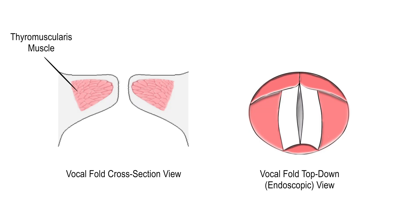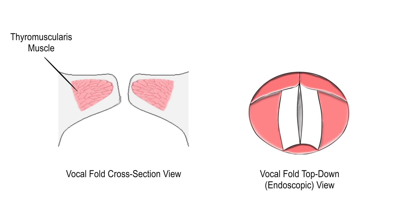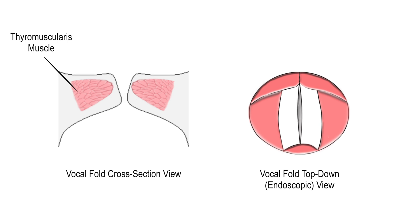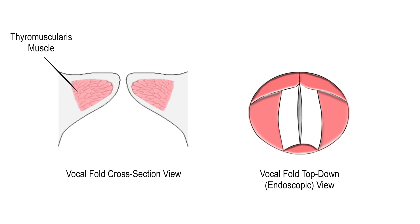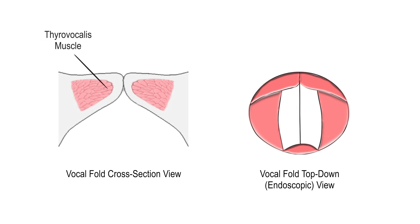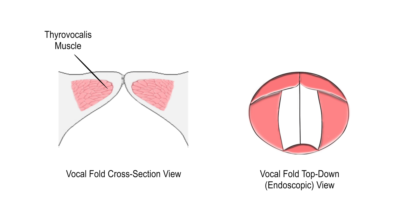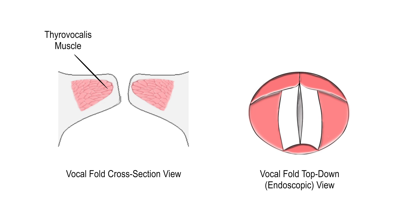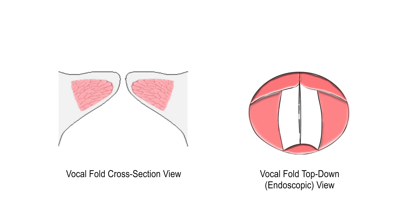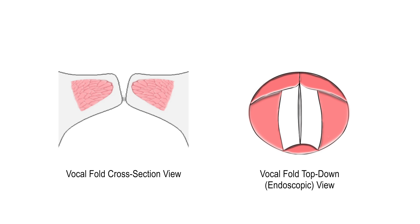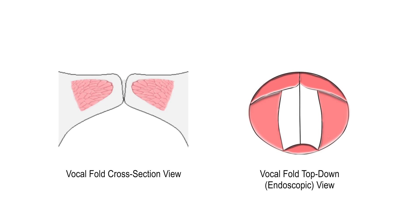Please keep in mind that the prior animation was exaggerated for clarity. In reality, only under certain phonation conditions will the part of the thyroarytenoid muscle known as the vocalis muscle actually move during vocal fold vibration, as shown in this simpler animation. At normal loudness, note how the vocal fold membrane moves freely over the muscle.